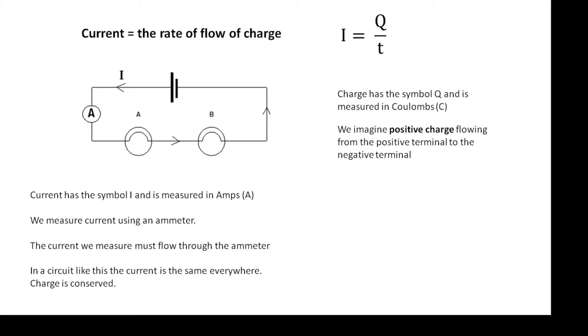In a circuit like this, the current will be the same everywhere because, in other words, charge does not get used up. The amount of charge leaving the cell every second is the same as the amount of charge arriving every second. Charge is conserved.